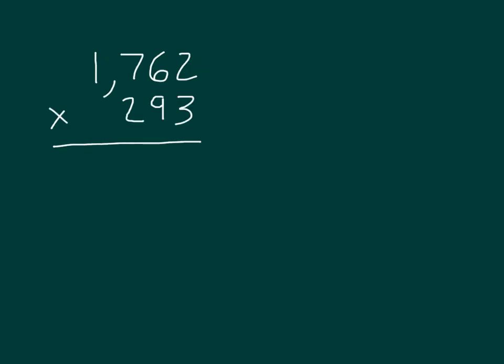Here I have another problem, 1,762 times 293. What I can do is estimate the product to the nearest hundreds place. 1,762 rounds to 1,800, and 293 would round to 300.